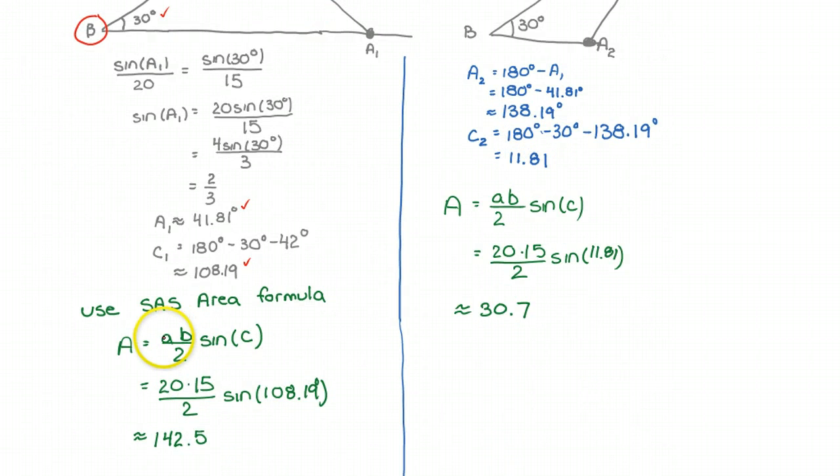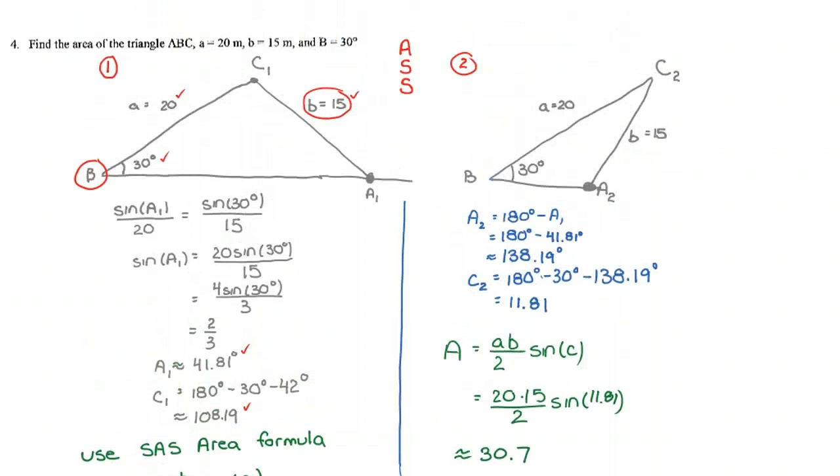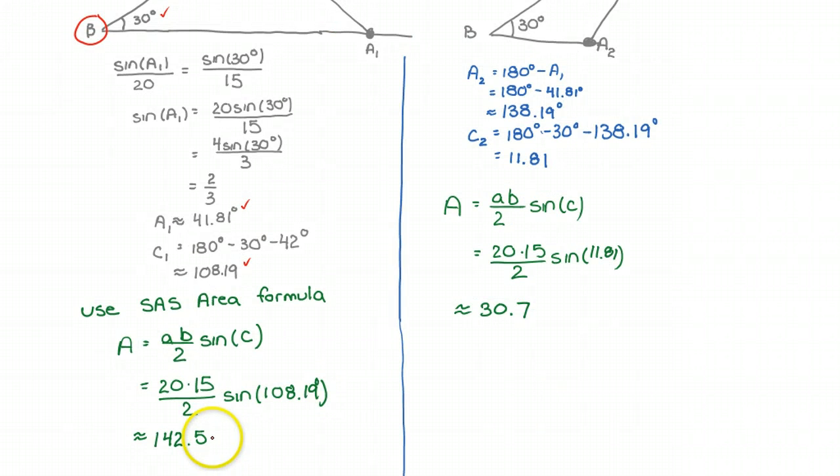And that is A times B over 2 sine C. So I do a substitution and I get 142.5. And I believe the units were meters. So we should put here meters squared. Perfect.